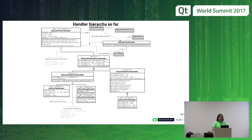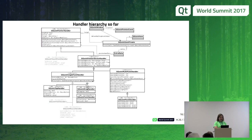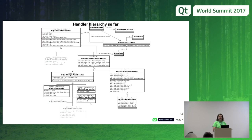The handler hierarchy: we have abstract base class PointerHandler; PointerDeviceHandler adds device-specific properties like which buttons are pressed; SinglePointHandler only reacts to one point — most handlers inherit this since dragging needs only one point; MultiPointHandler has minimum and maximum point count properties. The concrete leaf classes are: PinchHandler (the only multi-point one so far), DragHandler, TapHandler, and PointHandler — which isn't in 5.10 yet but is used to move a sprite in response to a touch point moving, done via passive grab.